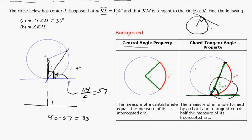What's the measure of KJL? So we should have done that one first. That's easy. That's a central angle. So it's going to be the same as the arc. So that's going to be 114.